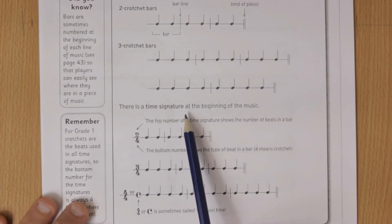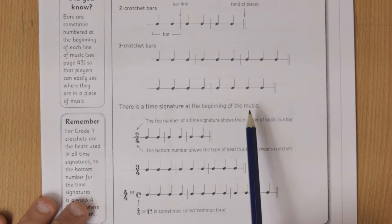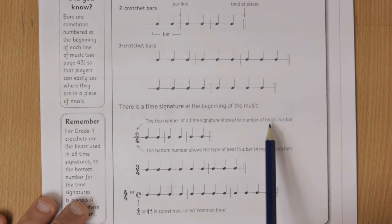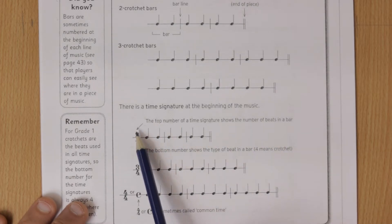There is a time signature at the beginning of the music. The top number of a time signature shows the number of beats in a bar. So here's the top number, and it's a two, so that tells you that there are two beats in each bar.